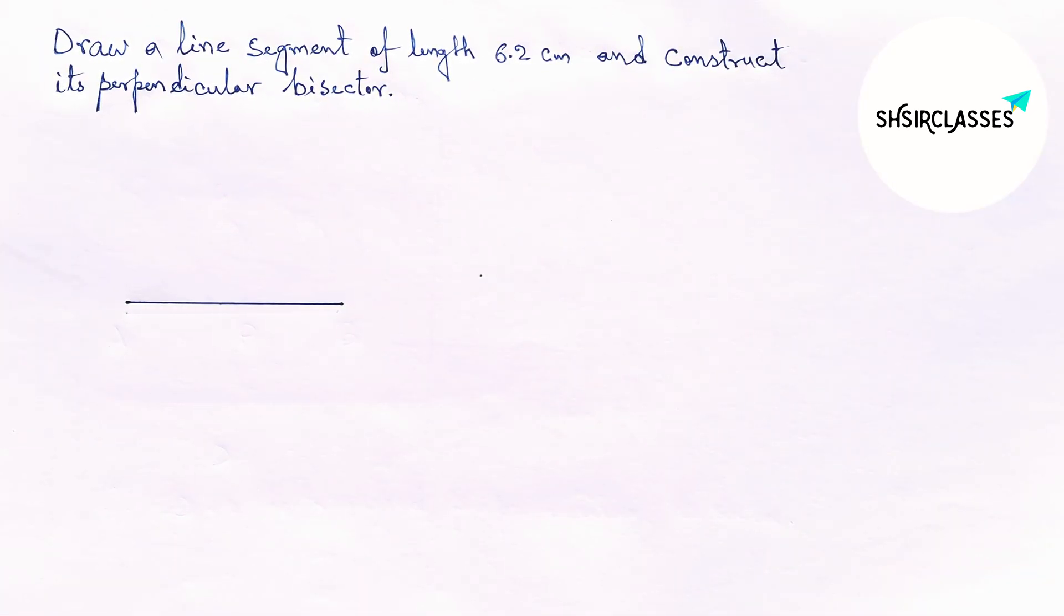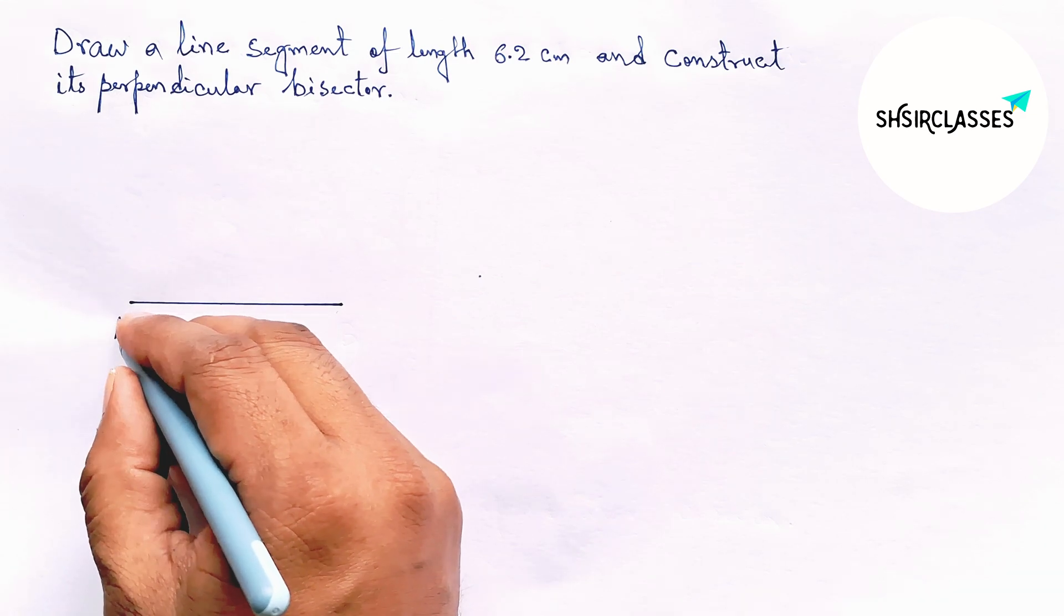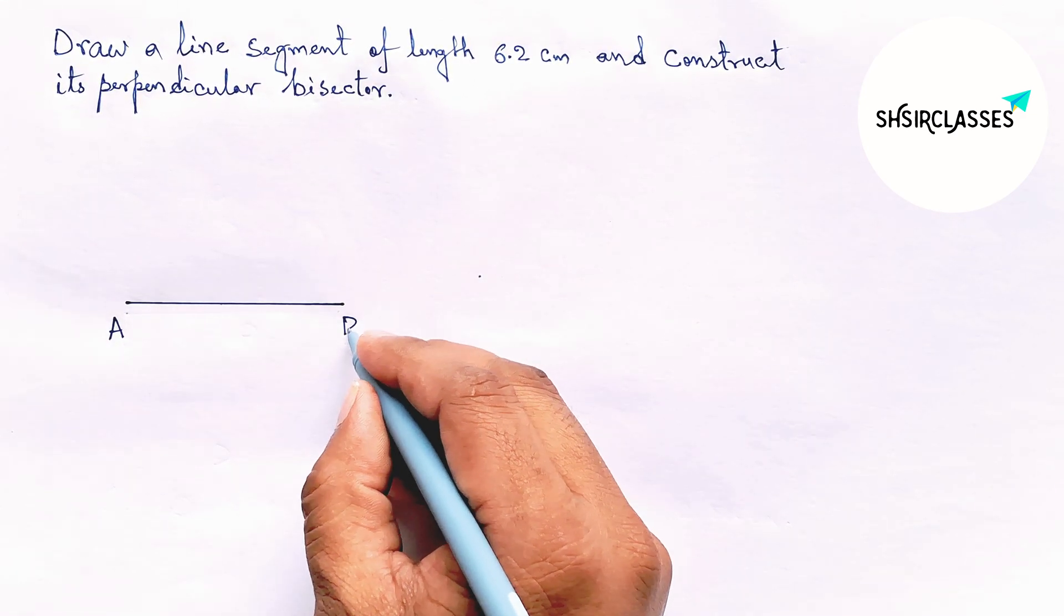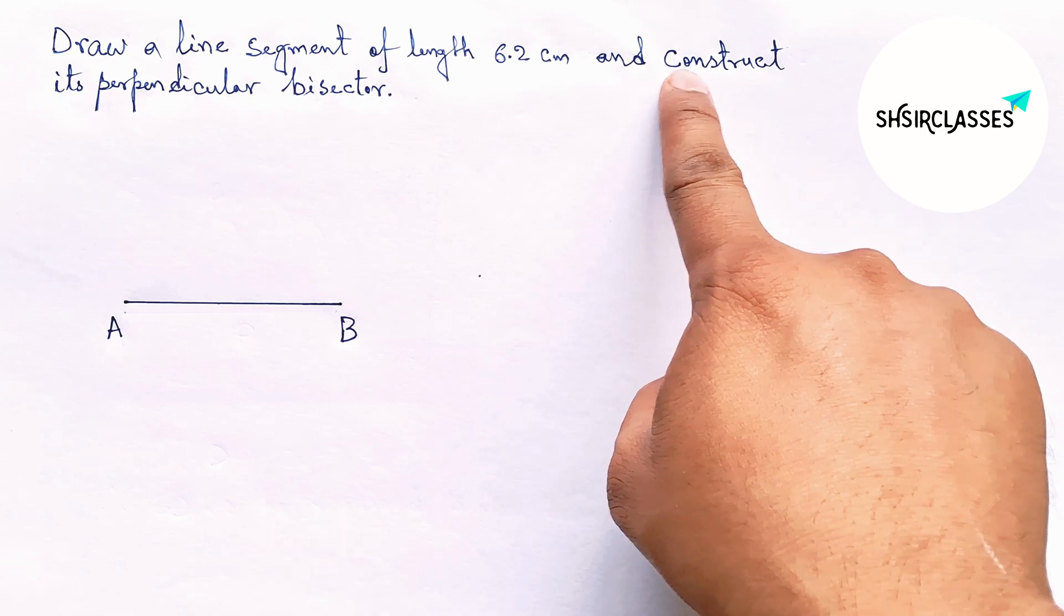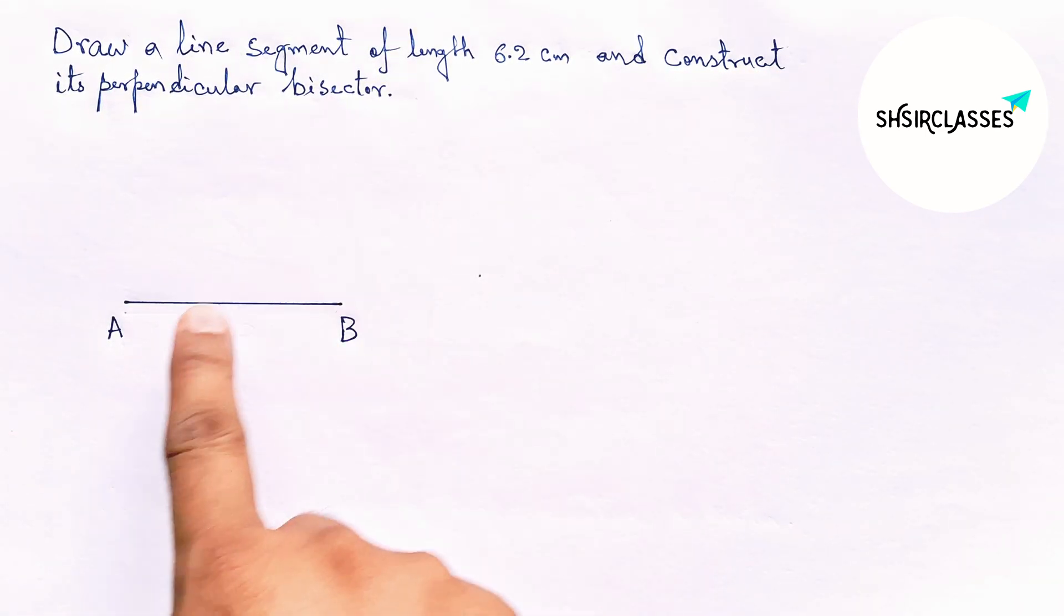Okay, now labeling here A and B. Next, construct its perpendicular bisector to the line AB with the help of compass.